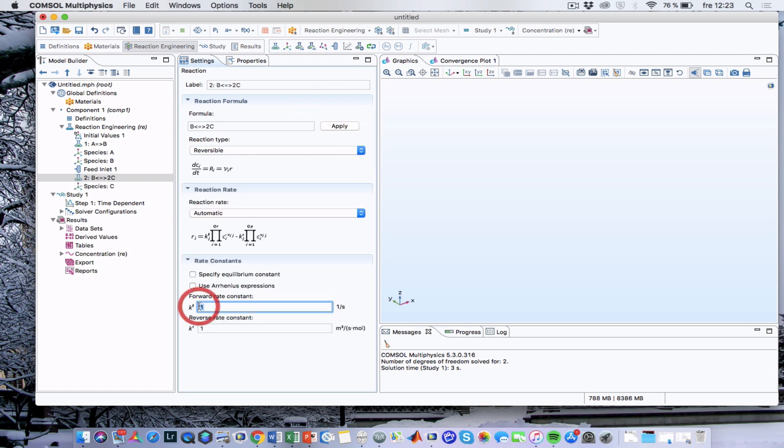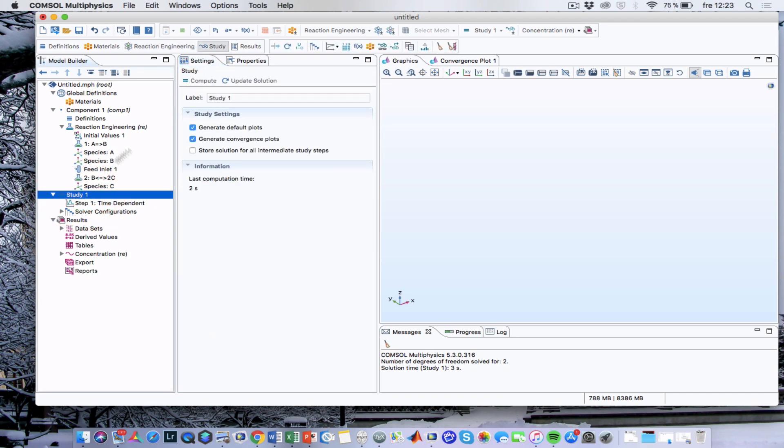And we can enter the rate constants 0.5 and 1.5. Here we can see that COMSOL gives a hint of which units we should use. Now we can just go to Study and to Compute.